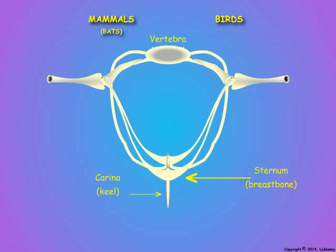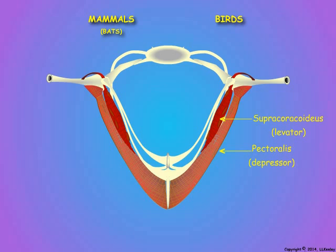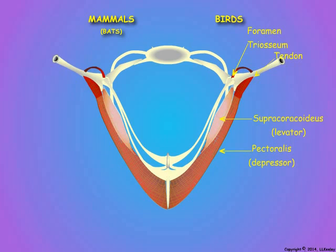Birds have a large breast bone or sternum with an enlarged keel-like structure called the carina, and both flight muscles attach to the sternum. The humerus bone of the wings articulates at a joint with the clavicle, the coracoid bone, and the scapula or shoulder blade, which in birds is attached solidly to the vertebrae and is immovable. The large pectoralis muscles attach to the carina of the sternum and to the humerus of the wing and produce the downstroke. Supracoracoideus muscles attach to the sternum beneath the pectoralis muscles.